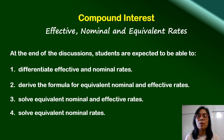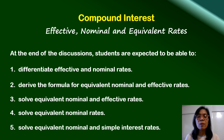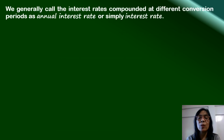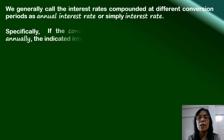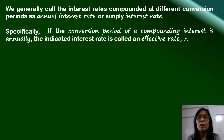In our previous discussions, we called interest rates compounded at different conversion periods simply as annual interest rate or interest rate. Now we will be more specific. If the conversion period of a compounding interest is annually, then the indicated interest rate is considered an effective rate. We use R to denote effective rate.